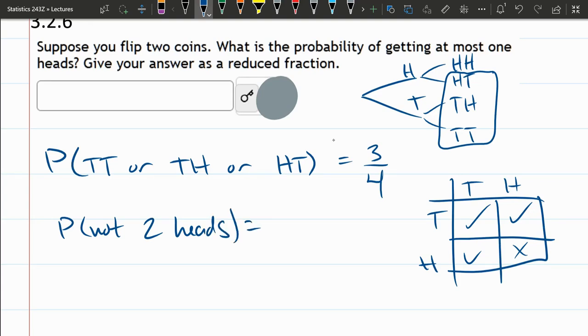So the probability of two heads, there's one possibility of two heads. So it's one out of four total.